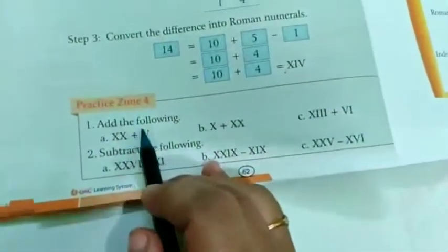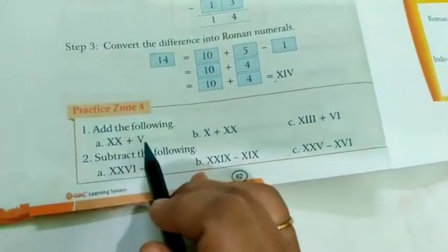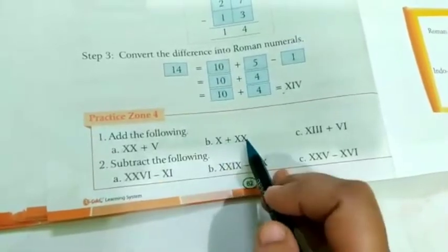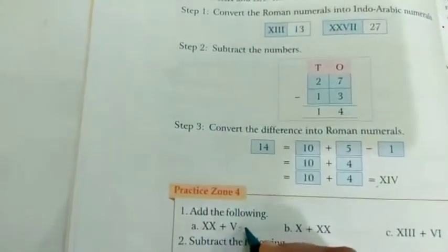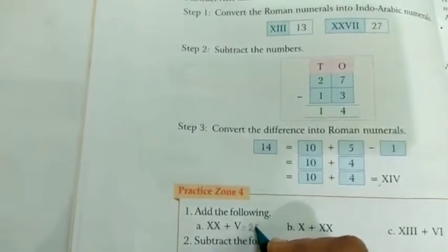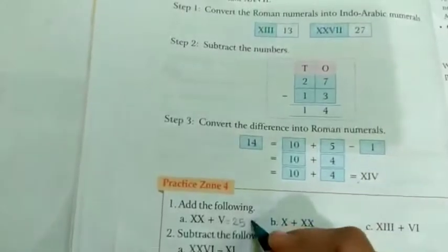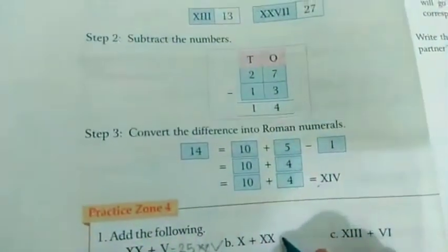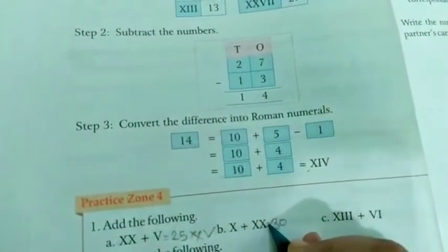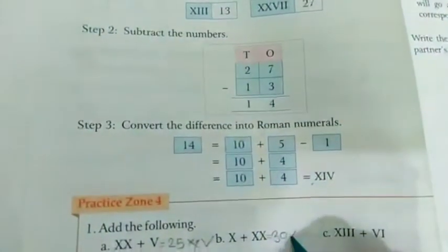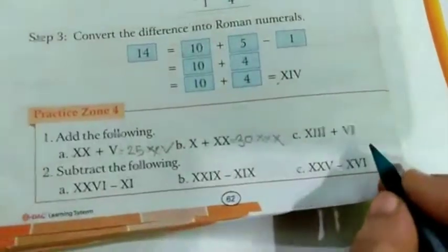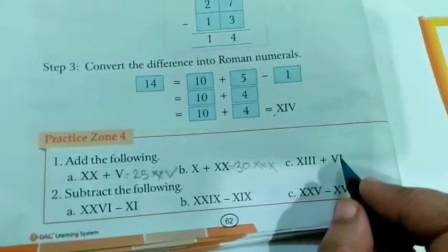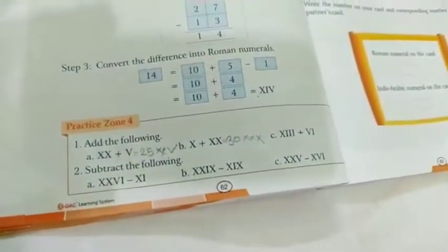So here add the following: 10 plus 20 plus 5 that is 25. X plus XX, X here that is 25 which you have to write like this. Then X plus X plus XX that is 30, how you are going to write 30? XXX. Then 13 plus 6. Like this you have to add and subtract.